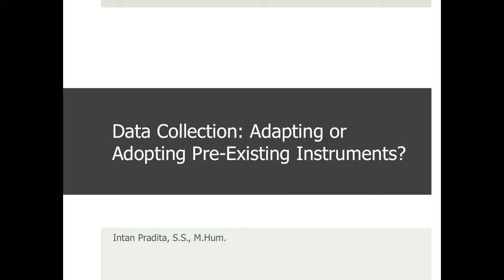Today's agenda is about data collection. For the survey study, you will be adapting or adopting pre-existing instruments. The instruments in quantitative research, specifically in the survey study research design, are only two types: either a questionnaire or a test. Pre-existing means that you do not need to develop the questionnaire or test yourself — they have already been used or developed by other scholars.